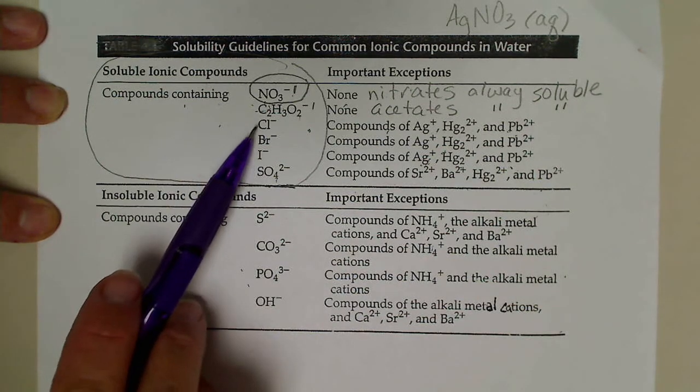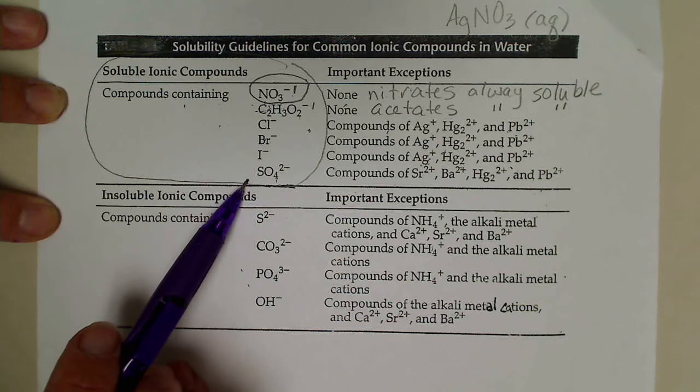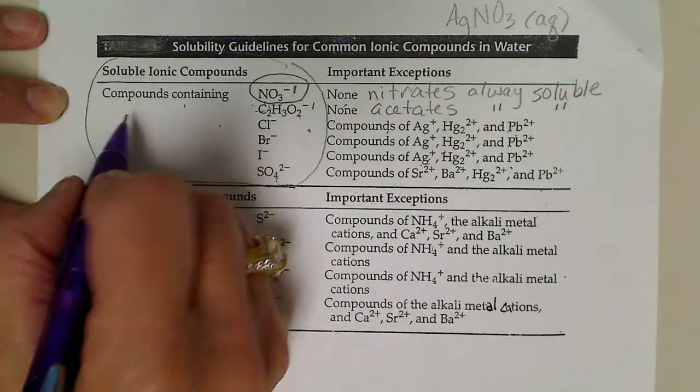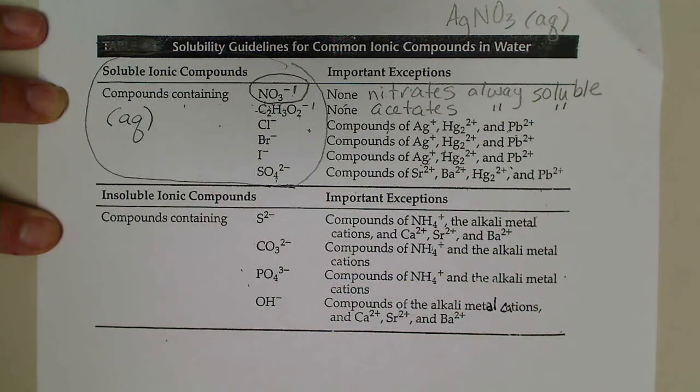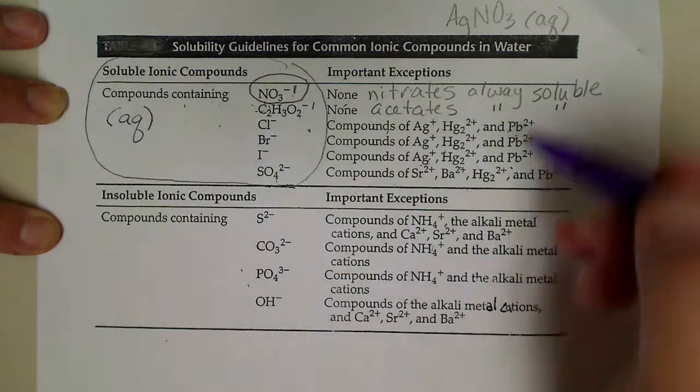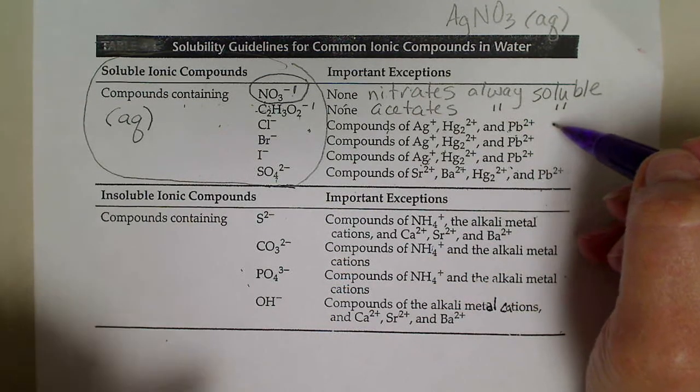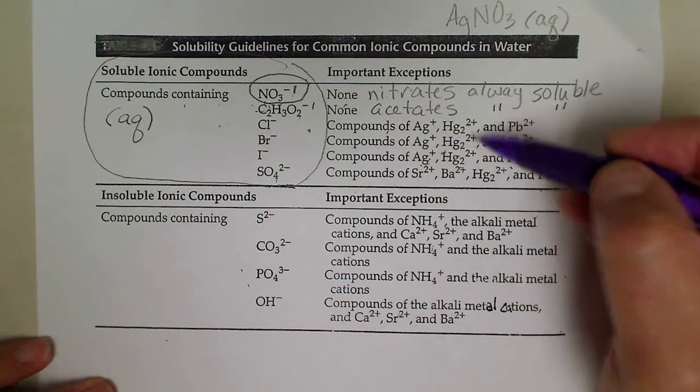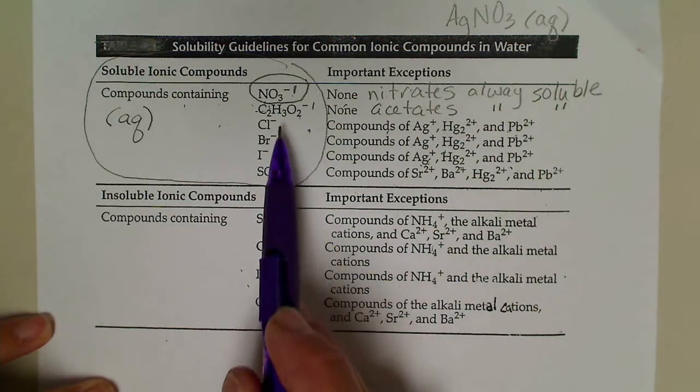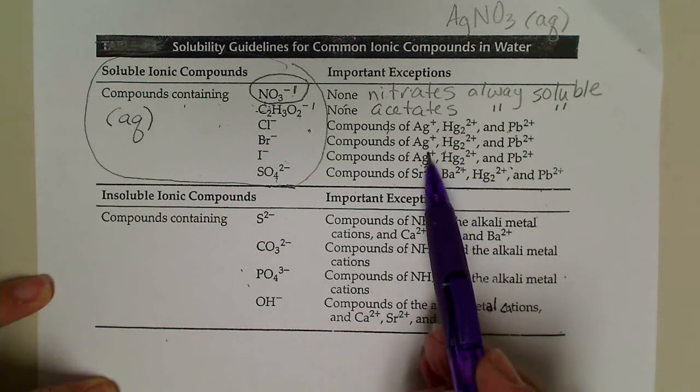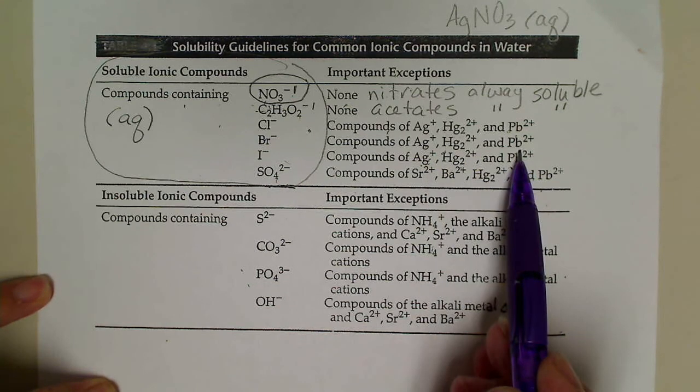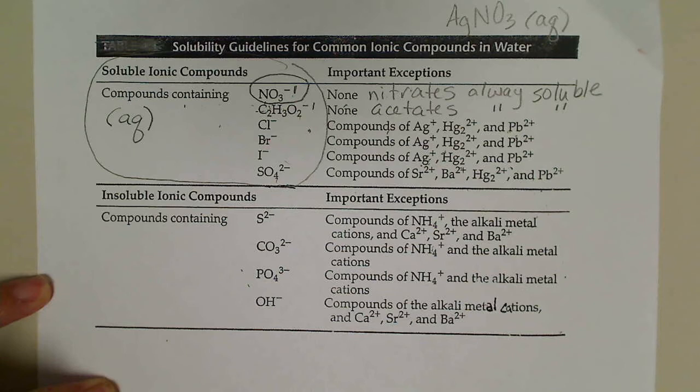If a metal is combined with chloride, bromide, iodide, or sulfate, those compounds are also soluble. So soluble means we'll write (aq) next to that compound. There are exceptions to the rule, and that is listed over here. If chloride, bromide, or iodide are in the presence of either silver ion, mercury, or lead ions, then we will see the formation of a solid.